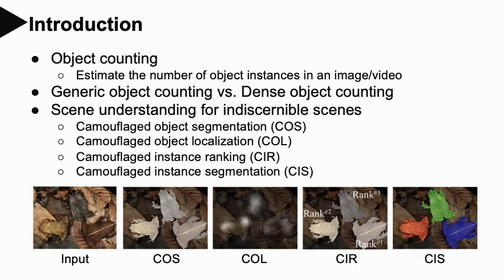Recently, scene understanding for indiscernible scenes has attracted more and more attention. It is to understand images or videos for which the foreground and background are similar. Traditional methods usually fail in this situation. The tasks include camouflaged object segmentation, camouflaged object localization, and so on. To the best of our knowledge, there is no prior work focusing on object counting in indiscernible scenes.